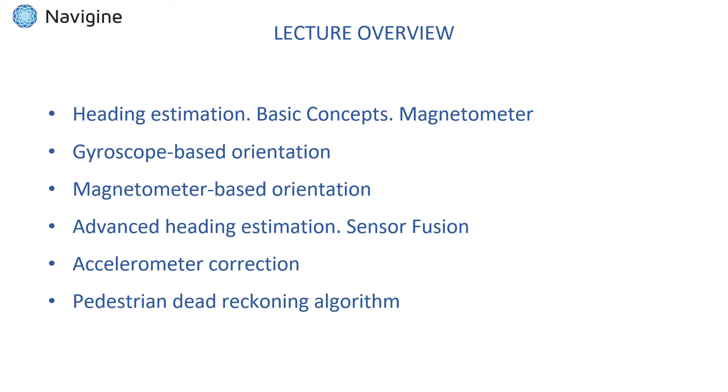Later we will demonstrate performance of both these approaches on real data track. After that we will switch to explanation of a more advanced technique called complementary filter where data from both magnetometer and gyroscope are used to obtain more precise heading estimate. After that we will give a brief comment on why accelerometer sensor is also necessary in heading estimation. And finally we will conclude with demonstration of how pedometer and complementary filter can be combined in a so-called pedestrian dead reckoning positioning approach.